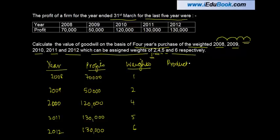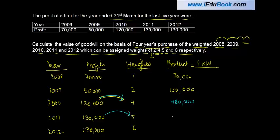Then we find out the product - product of profits into weight. So one times seventy thousand, simple. One hundred thousand. One twenty into four gives you four eighty. One thirty into five gives you six lakh fifty thousand and one thirty into six gives you seven lakh eighty thousand.